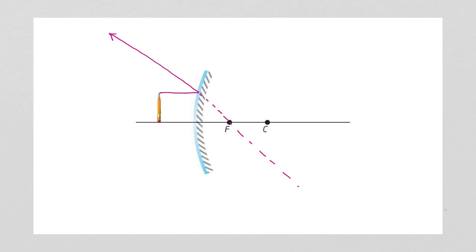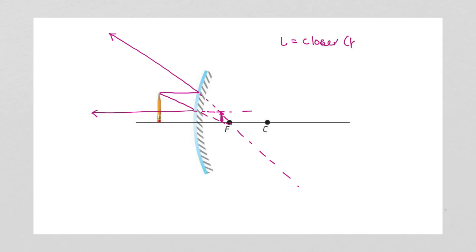The next ray goes through the focal point and reflects backwards. When it hits the mirror, it reflects backwards. We extend the light rays where they cross — there's our little image, there's our little pencil where those meet. The location is closer, behind the mirror. The orientation is upright. The size is smaller. And the type is virtual.